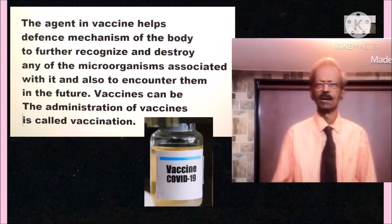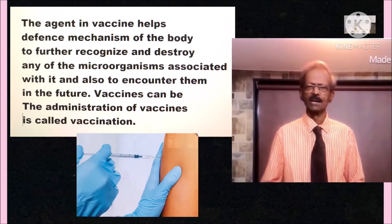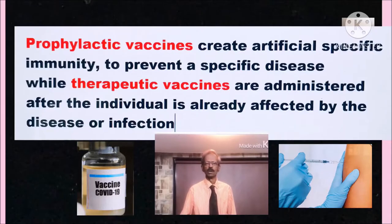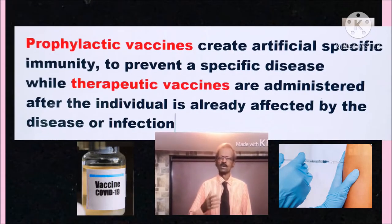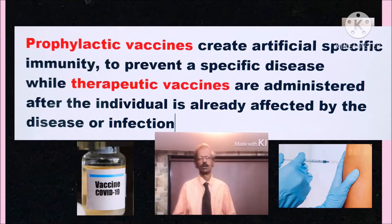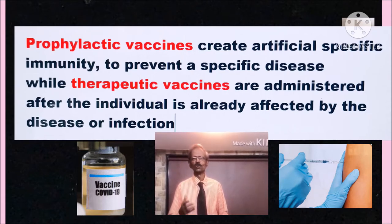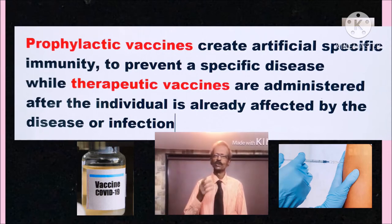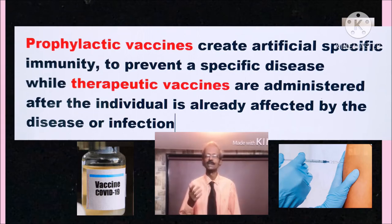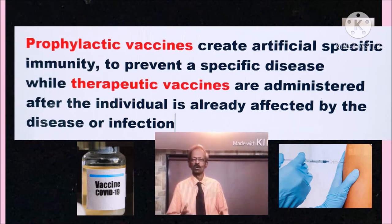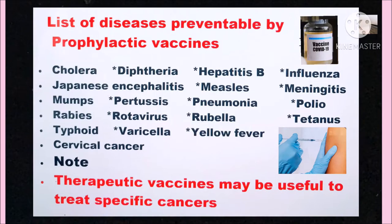The administration of vaccines is called vaccination. Prophylactic vaccines create artificial specific immunity to prevent a specific disease, while therapeutic vaccines are administered after the individual is already affected by a disease or infection.